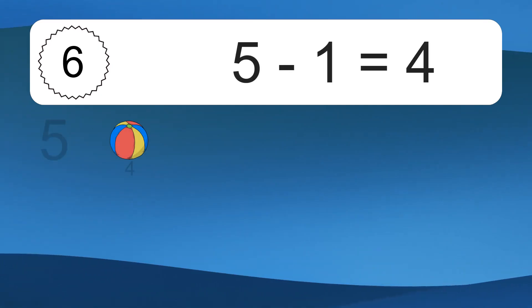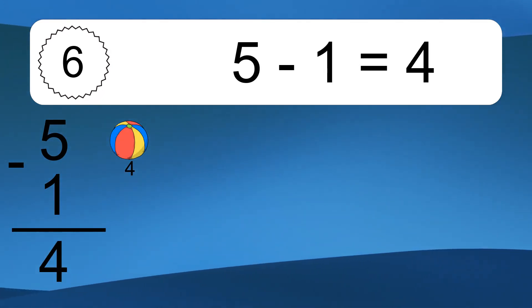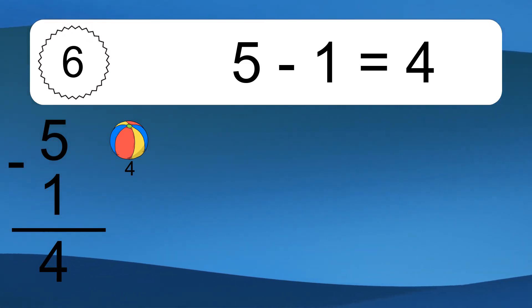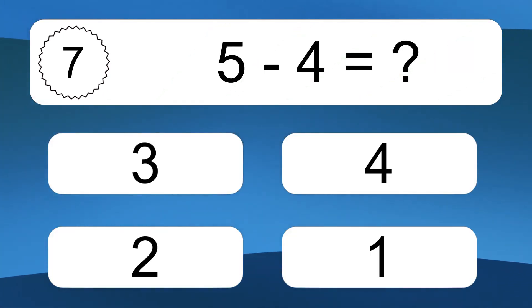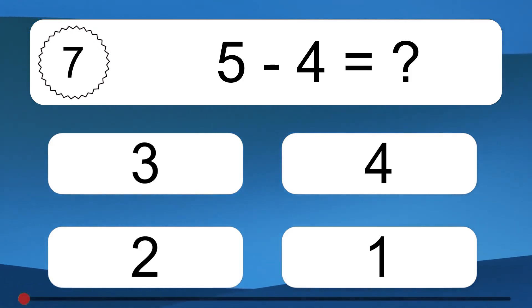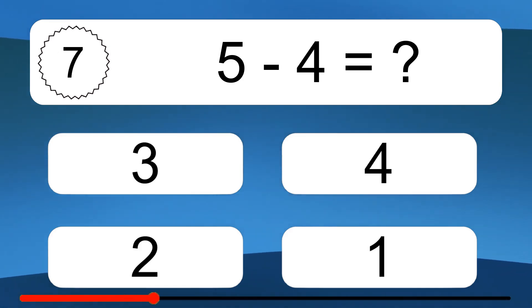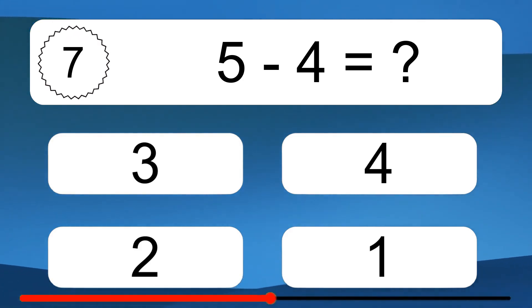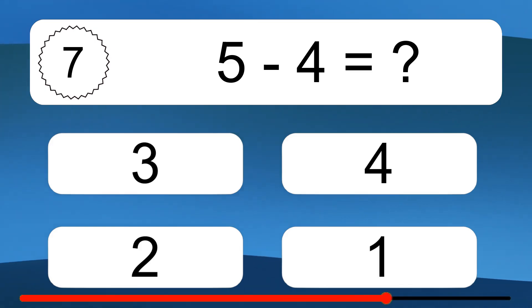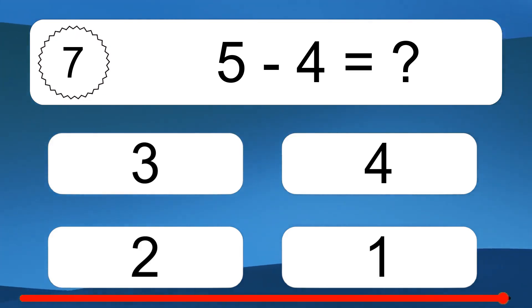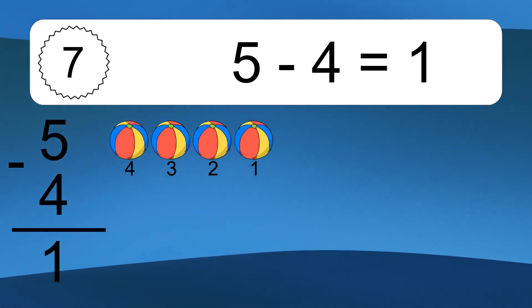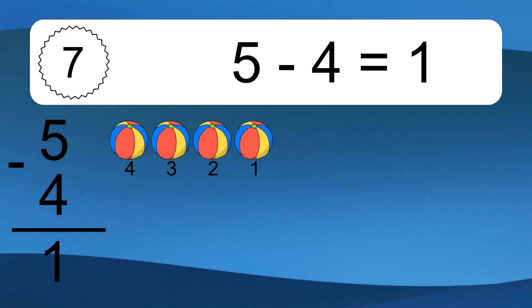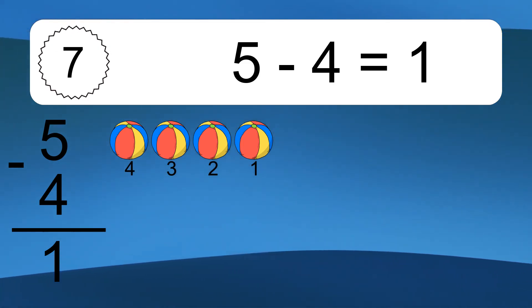5 minus 1 equals 4. Let's count it: 4. 5 minus 4 equals what? 5 minus 4 equals 1. Let's count it: 4, 3, 2, 1.